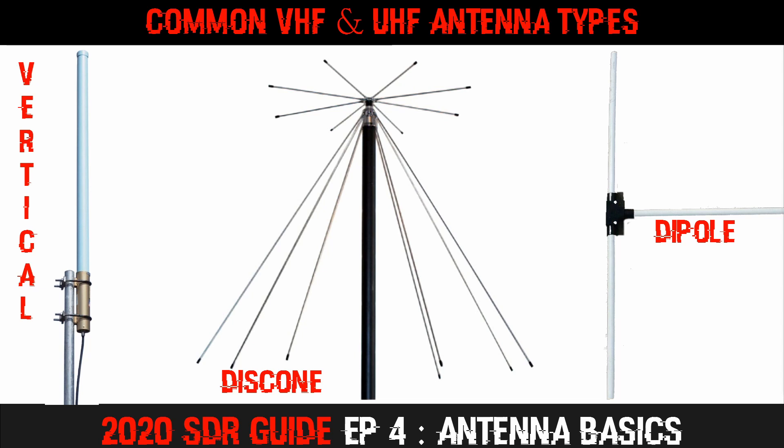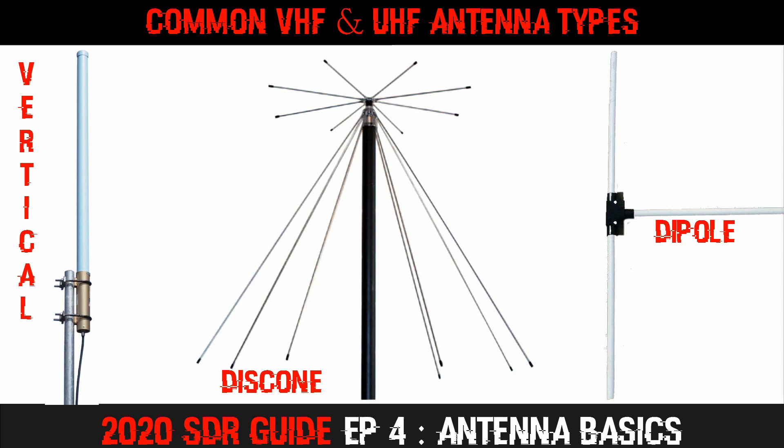Discones are popular wideband scanning antennas, typically sold as covering 25 to 1300 megahertz. Many are designed with a low SWR on the 2 meter and 70 centimeter amateur radio frequencies, which means they can also be used to transmit if you are a licensed operator. Prices typically start around $50. Dipoles are produced for a specific frequency range — they can be bought commercially but are also easy to make at home for just a few dollars. Although not considered wideband antennas they can still pick up signals across a wider range of frequencies. There are of course many other types, including Yagis, J-poles, and Slim Jims. I'll be releasing a few antenna reviews on the channel over the next few months.